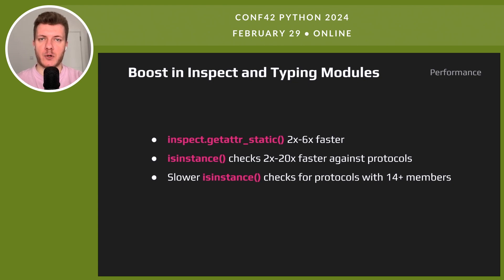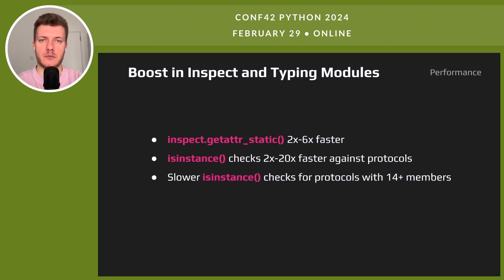The inspect and typing modules are now faster. inspect.getouterframes sees a speed increase of up to 6 times. isinstance checks against protocols are much quicker — some checks are now 20 times faster than before. However, protocols with over 14 members might be slower; this trade-off targets efficiency for the most common use cases. These enhancements aid in better code analysis and typing, making Python's introspection and typing overall more efficient.